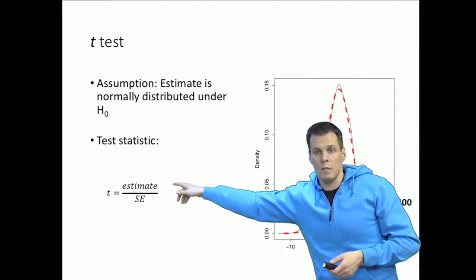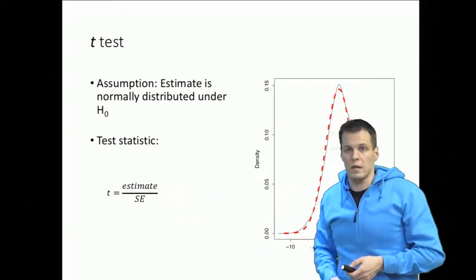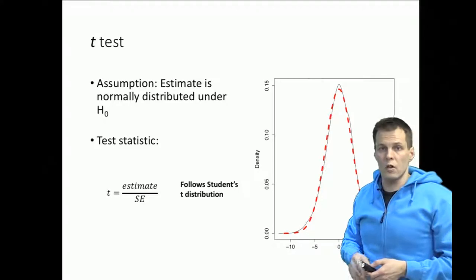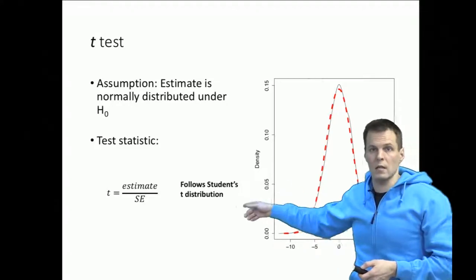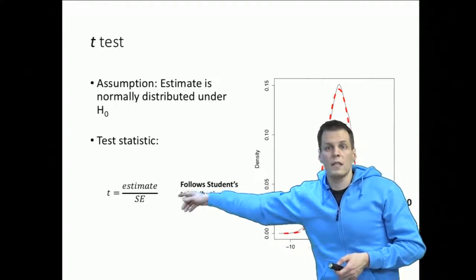So the estimate divided by standard error is distributed as students t if it's a t-test. And the idea was that instead of looking at the raw estimate, we standardized the estimate.